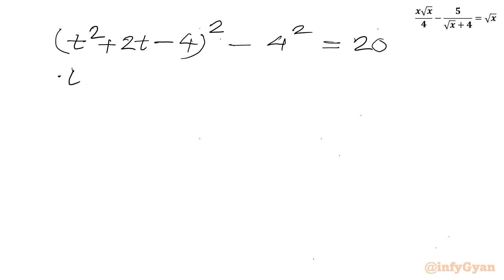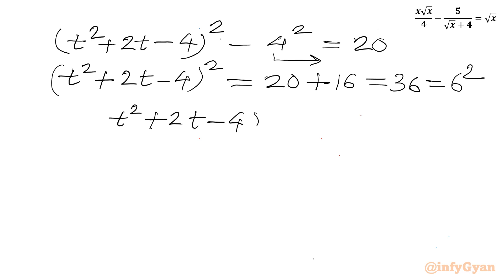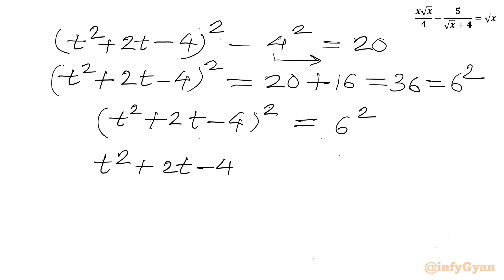So (t² + 2t − 4)² = 20 + 16 = 36, which is 6². Taking the square root of both sides, t² + 2t − 4 equals plus or minus 6.